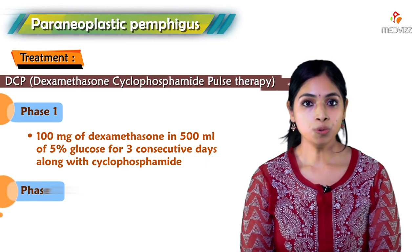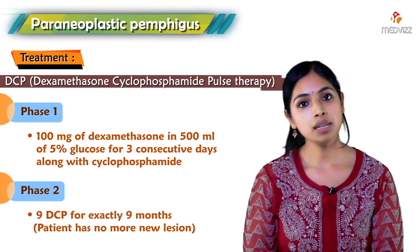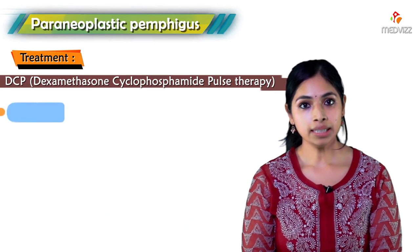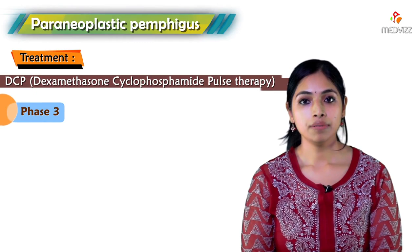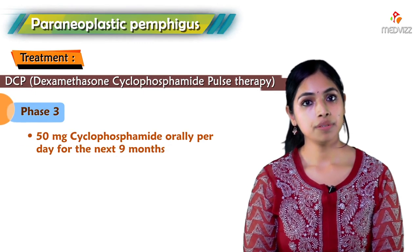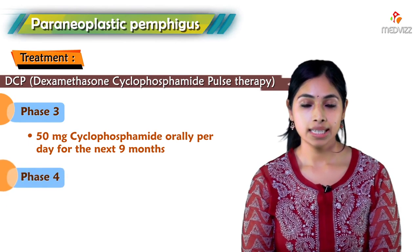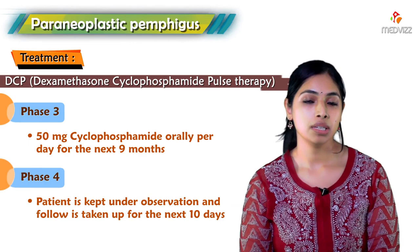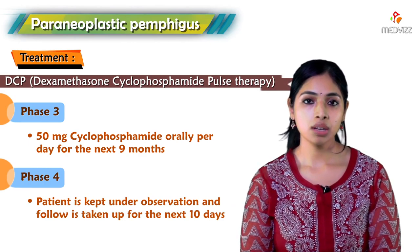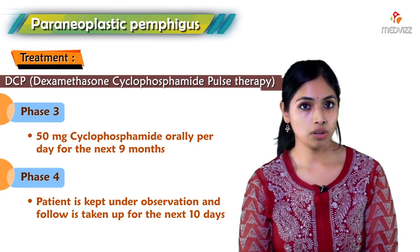In phase 2, the patient has no new lesions but DCP is continued for nine more months. In phase 3, corticosteroids are stopped altogether and cyclophosphamide 50 mg is given for about nine months. Phase 4 is a drug-free observation period where the patient is monitored for any new lesions. This completes the DCP cycle as a treatment alternative.